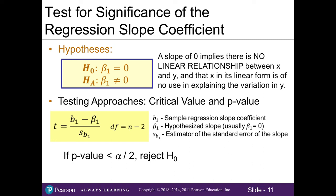In this video, we'll continue our understanding of regression analysis, specifically testing for significance. In section 14.1, even though we can compute the correlation coefficient, we know that it is subject to sampling error because we used sample data, and therefore had to conduct a test of significance. Likewise, the regression coefficients are based on sample data and are therefore also subject to sampling error. Hence, we need a testing procedure to determine whether our regression slope coefficient, our beta sub 1, is statistically significant.